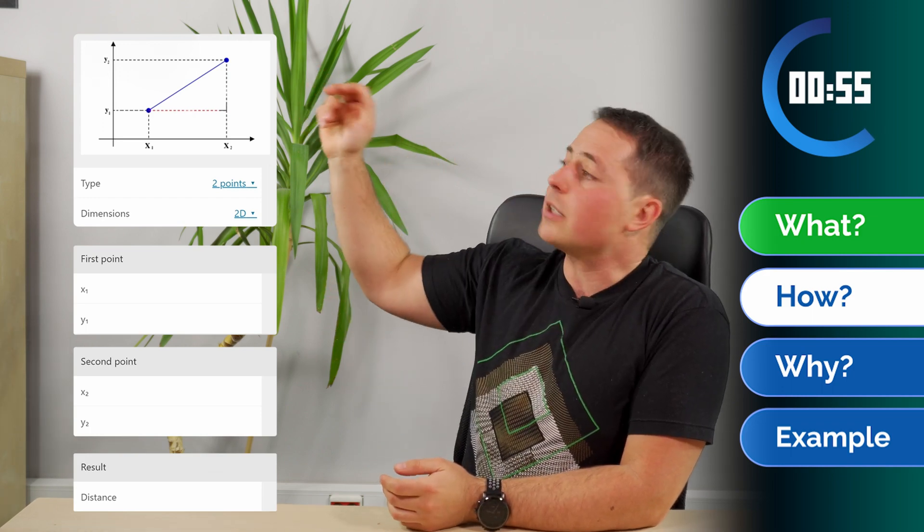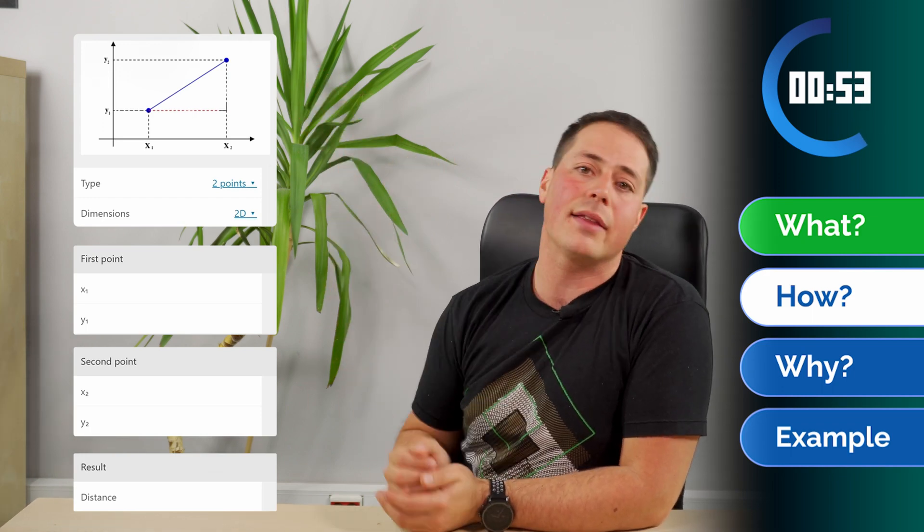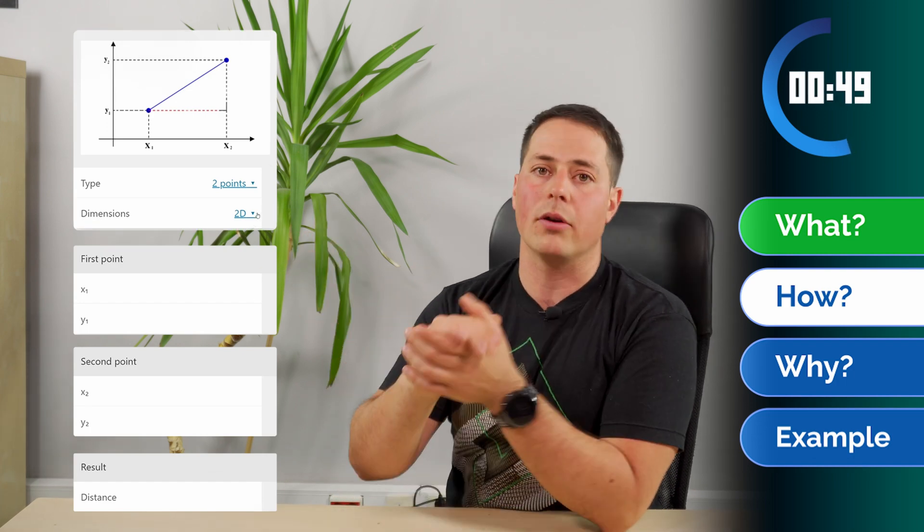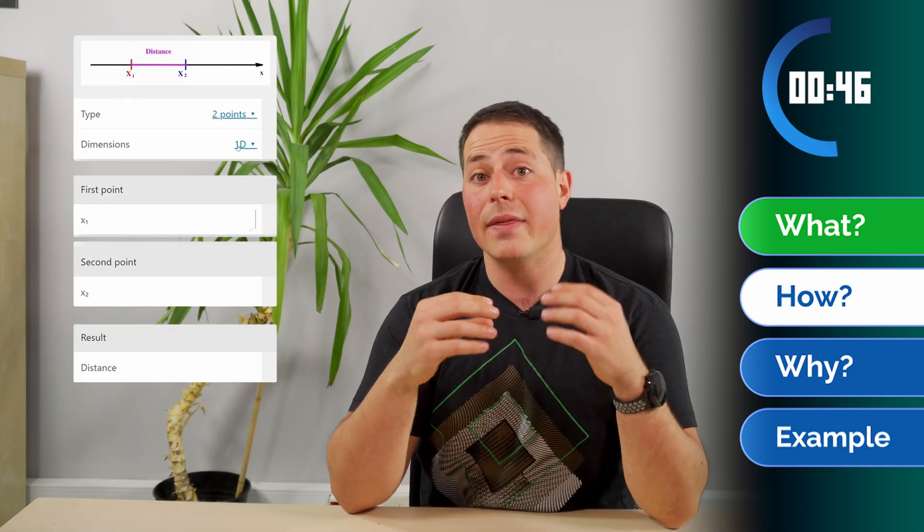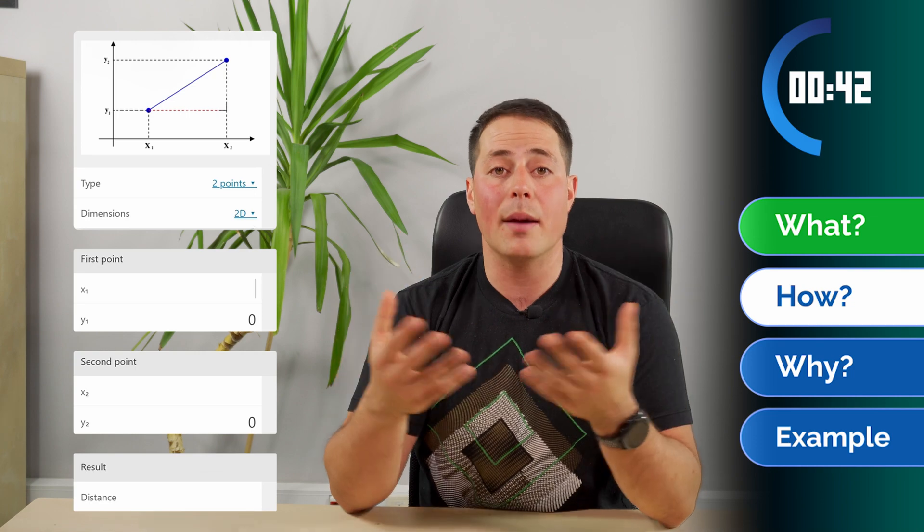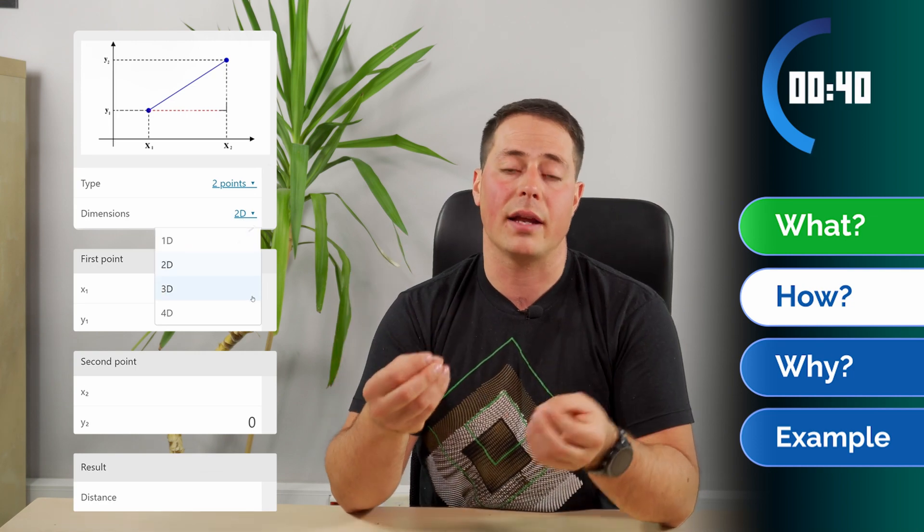So let's first select two-point functionality and then select the number of dimensions for each of our points. Obviously both of them are going to have the same number of dimensions, because the number of dimensions can be understood as the number of coordinates that define that point.